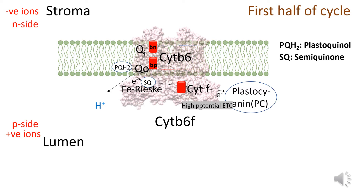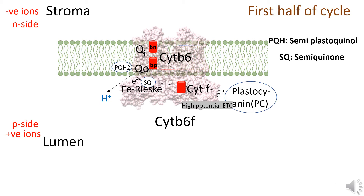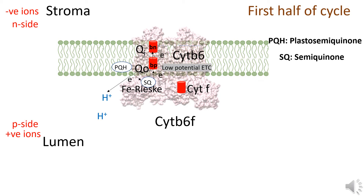The plastoquinol molecule comes to the Qo site, where it releases an electron to form the semiquinone. This electron flows through the heme center of cytochrome f and gets transferred to plastocyanin, reducing its copper. This causes a release of a proton from PQH2 into the lumen. This flow of electrons from plastoquinol to plastocyanin is called the high potential electron transfer chain. Due to the loss of a proton and an electron, PQH2 is transformed into PQH (plastosemiquinone).